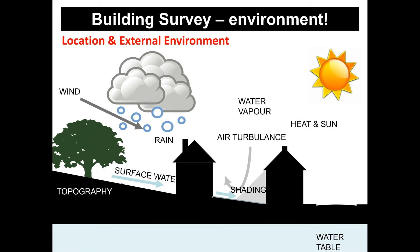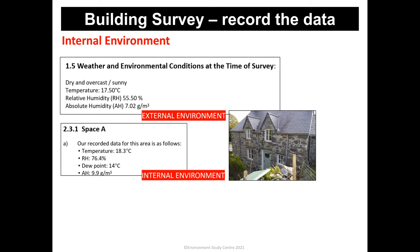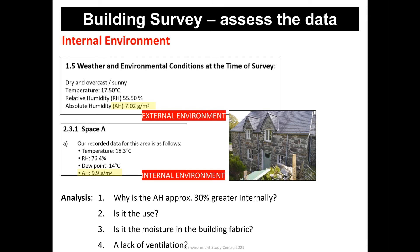We need to record data — on the outside and the inside of the building — for a number of reasons. The inside is going to relate to what's happening on the outside, and there's a huge difference in environmental conditions externally in July compared to January. For example, if we look at absolute humidity levels and compare them outside to inside, we can see quite a difference. We've got to analyse that data and ask: why is the absolute humidity so much greater internally? Is it due to the use of the building, or is it due to moisture-laden building fabric, or a lack of ventilation? All these questions and more need to be asked and answered.